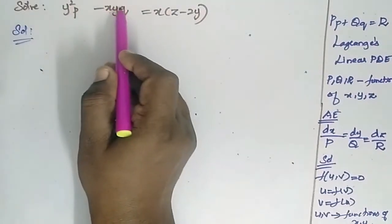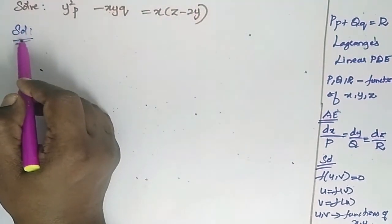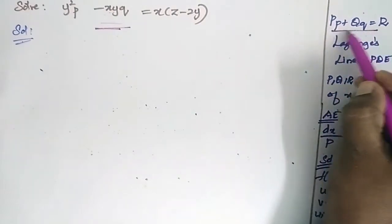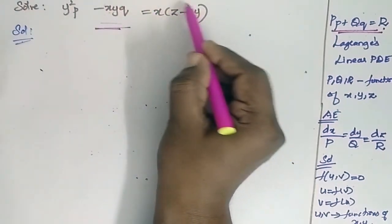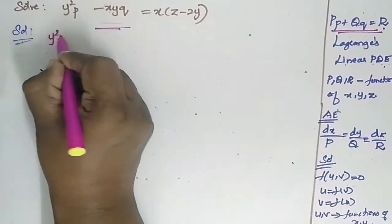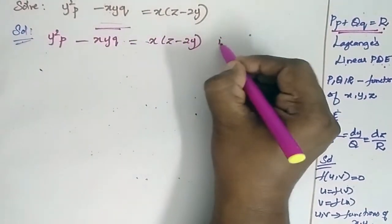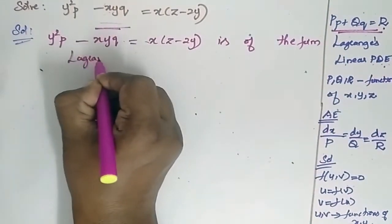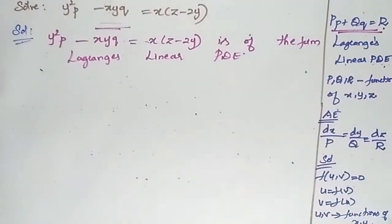Solve y²p - xyq = x(z - 2y). Now we are going for the solution. This equation is of the form Pp + Qq = R, where this is my P, this is my Q, and this is my R. So it is of the form Lagrange's linear partial differential equation.